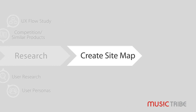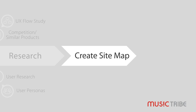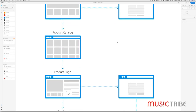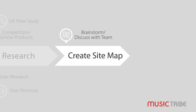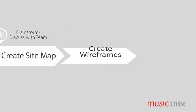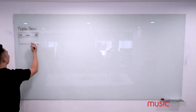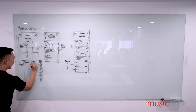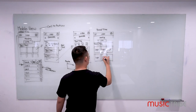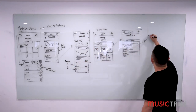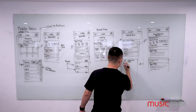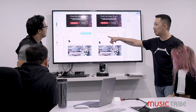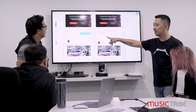Next is to create a sitemap for your project based on your research. Make sure you discuss it with your team or stakeholders so you can gather inputs. Once that's done, use it as your guide in creating wireframes. Wireframes are rough sketches of your idea of the UX design — it could be drawings on your sketchpad or you can use applications such as Adobe XD. Again, involve your team and present it to your stakeholders to gather feedback.